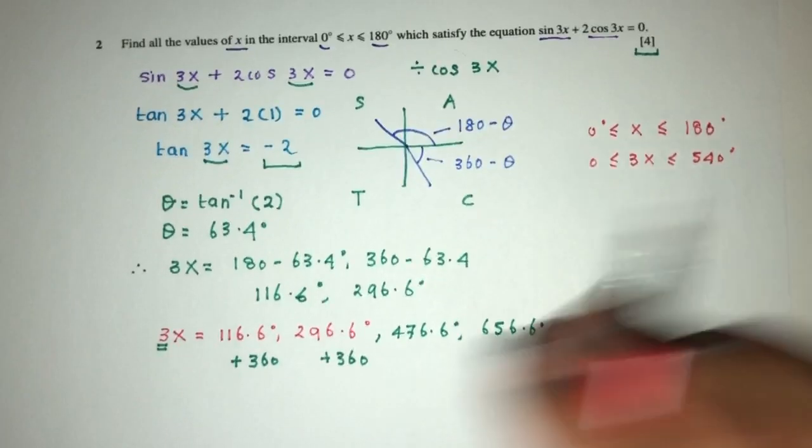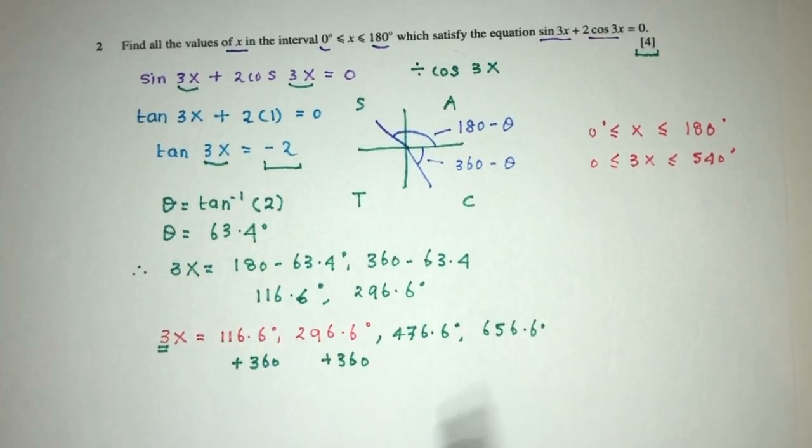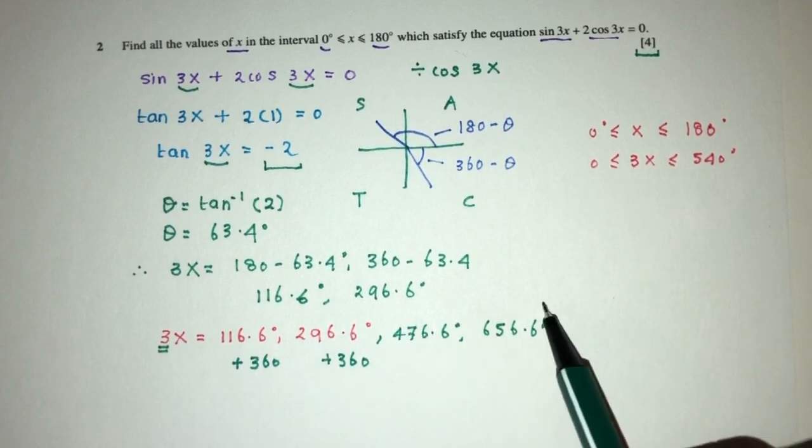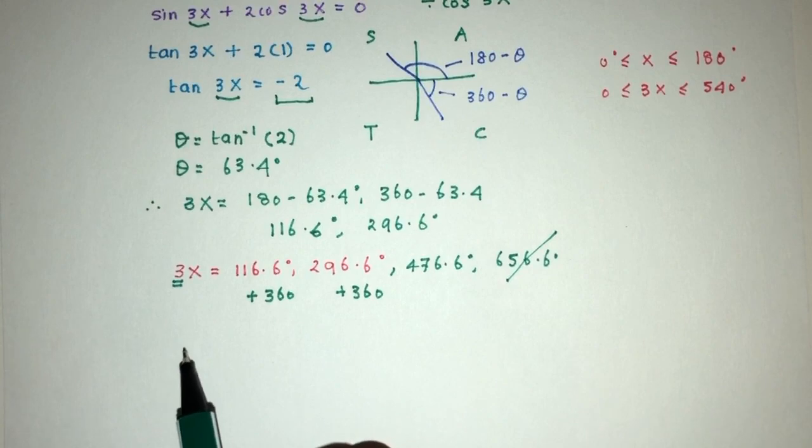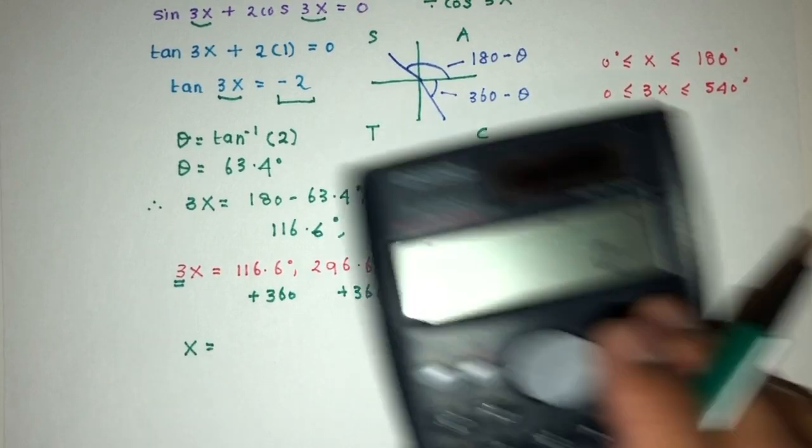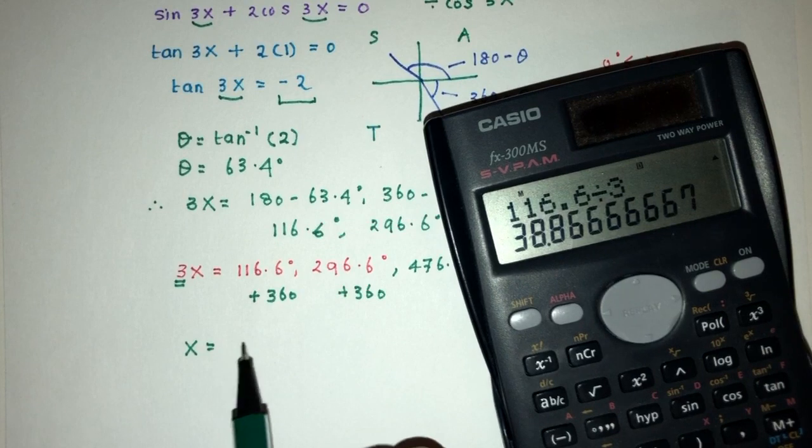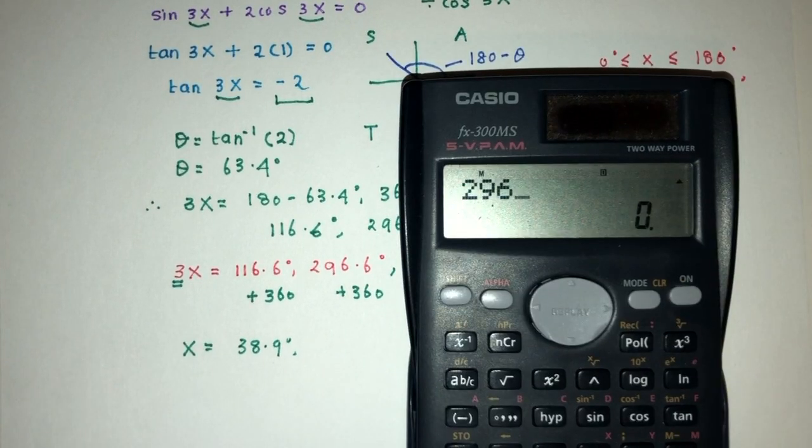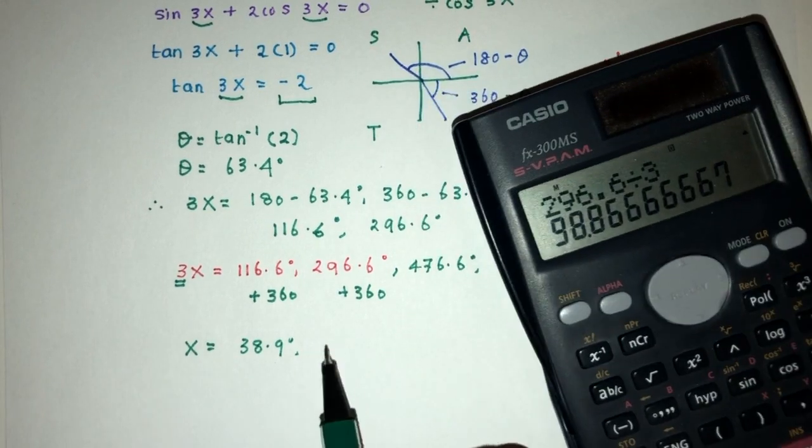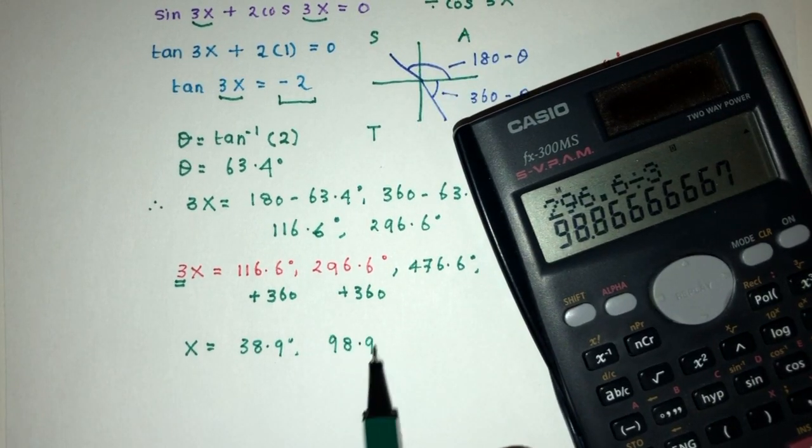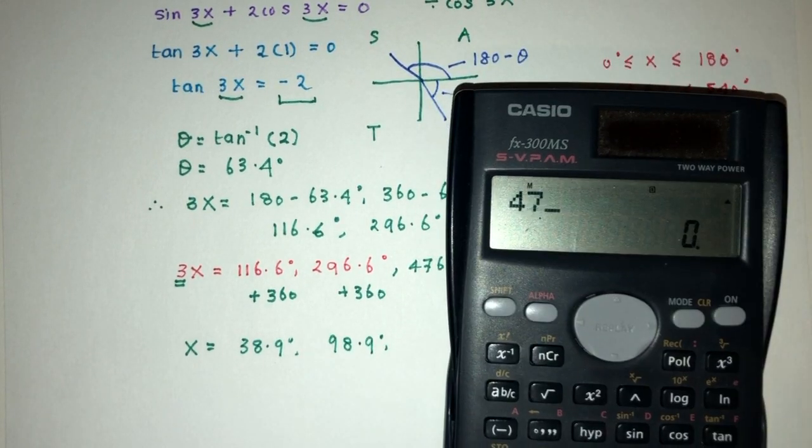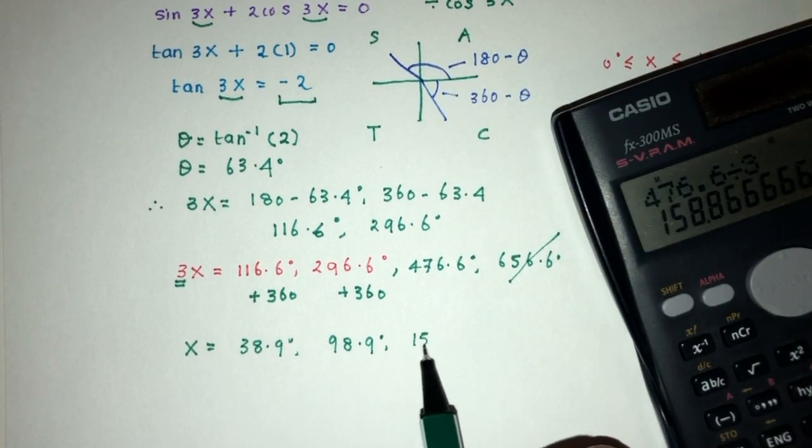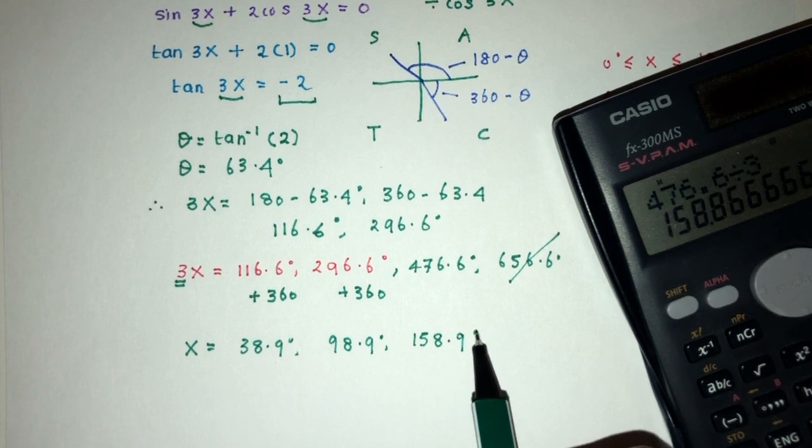So now we can already see which one is too much. So here we have 3x, so this is okay, okay, okay, but this is too much, so we don't need this one. So finally, x have to be 116.6 divided by 3, that will be 38.9. 296.6 divided by 3, that will be 98.9, and then 476.6 divided by 3, that should be 158.9 degrees.